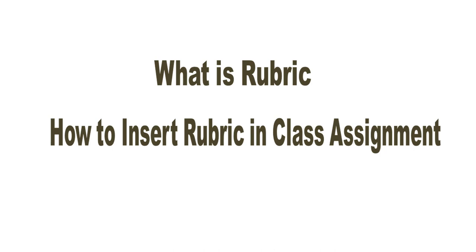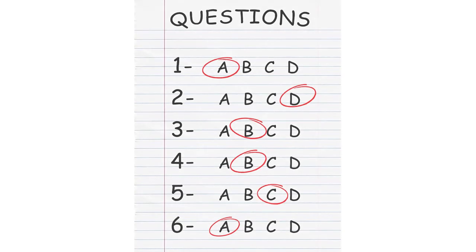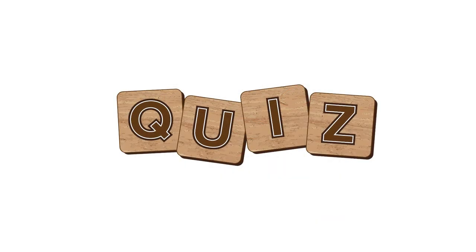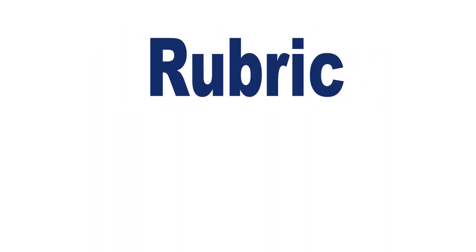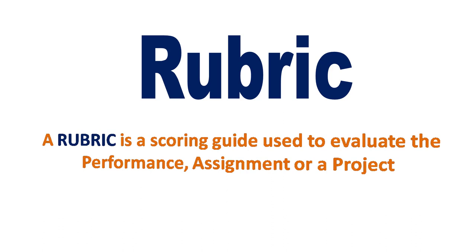Whenever you give any multiple choice question or objective type quiz to your students, it is very easy to evaluate. But if you are giving any subjective type assignment or project to your students, it becomes a little bit difficult to evaluate. This is where the role of rubric comes into the picture. A rubric is a scoring guide used to evaluate the performance, assignment, or any project.